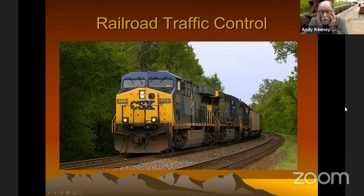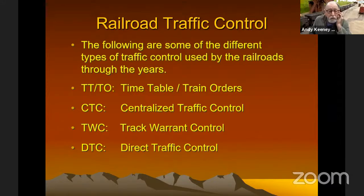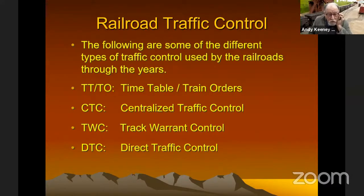So what we're going to talk about are the various ways of controlling traffic through the years. The basics are timetable train orders, which are pretty much done — there might be a few on some of the smaller railroads, branch lines with only one or two trains. CTC, centralized traffic control, is basically what they have today just about all over. Along with that, they have TWC, traffic warrant control, or direct traffic control — direct traffic control you don't see as much; they're more out west.